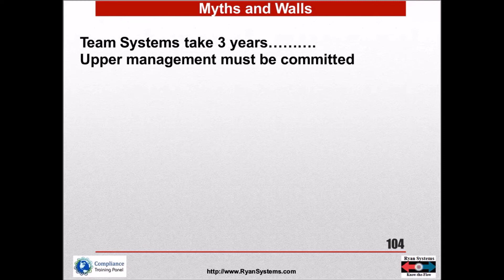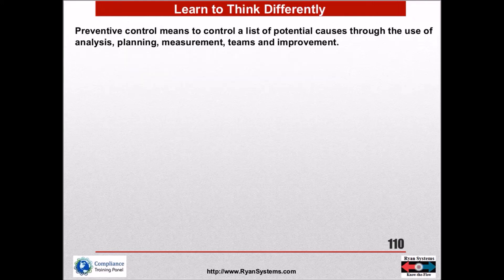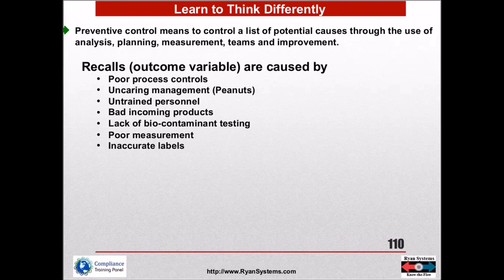Building teams takes three years? No it doesn't. Upper management must be committed — that's the best way — but the truth is a lot of change starts at lower levels. If you get one good team working and they can show results with a solution tracking sheet, that's a win. You've got to learn to think preventively, use your people, do some planning together, build teams, know how to measure, and get away from the thinking that passing a food safety audit means you can go back to bed. That food safety audit approach helped move the industry into better food safety at some level, but it's not enough.